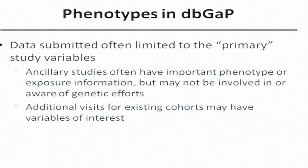Data submitted to dbGaP is often limited to the primary study variables. A number of times there may be additional phenotypes or exposures measured in ancillary studies, but investigators aren't aware of the genetic data being in dbGaP and don't have a mandate to submit it. But if you go to them and ask, they often will. Sometimes it's also a matter of making sure that additional visit information is incorporated as soon as possible.